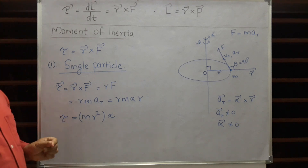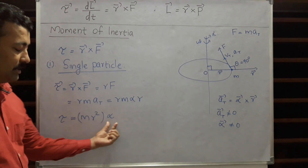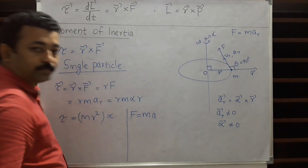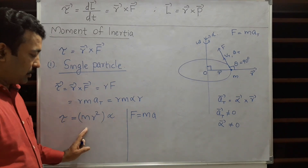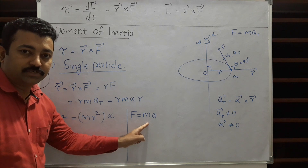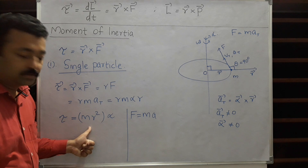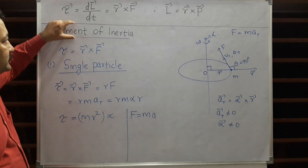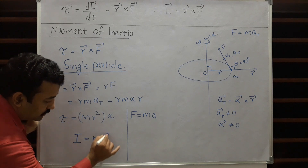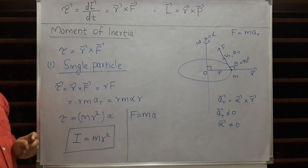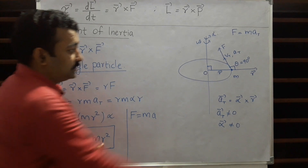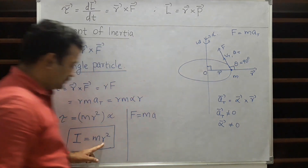This is a very simple expression: torque equals a quantity multiplied by angular acceleration. This is quite similar to F = ma in translation. So this quantity — m·r² — represents the analogous parameter of mass in rotation. This is called the Moment of Inertia or Rotational Inertia, represented by the symbol I. For a single particle, I = m·r², where m is the mass of the particle and r is the distance from the particle to the axis of rotation.